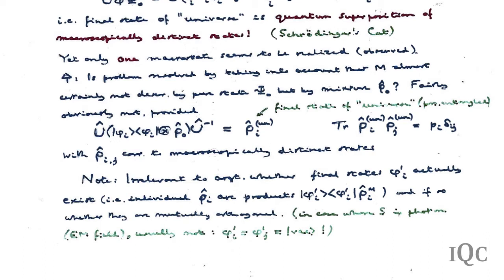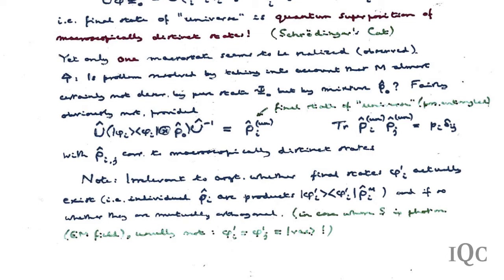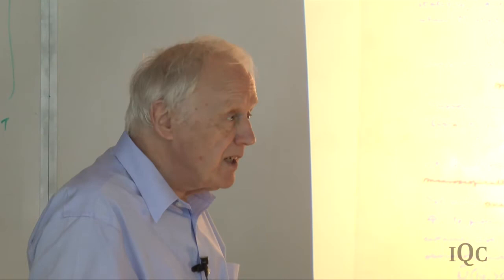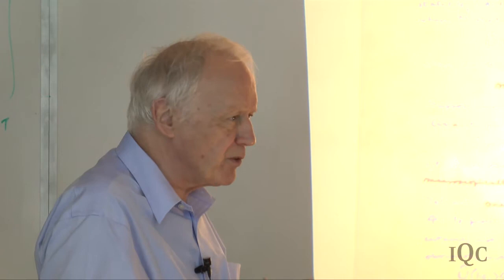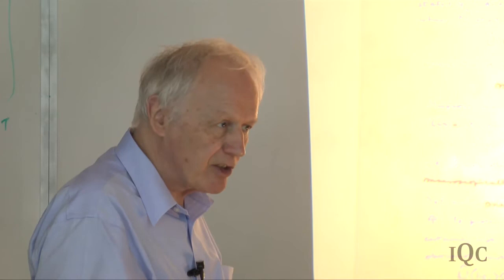One minor point: the final state φ'ᵢ of the system is fairly irrelevant—it might not even exist. For example, in the case of absorption of a photon, the final state of the electromagnetic field is the vacuum, irrespective of the polarization. In that case you lose the entanglement of the system with the apparatus, but that is irrelevant. What matters is the final state of the universe containing the apparatus.